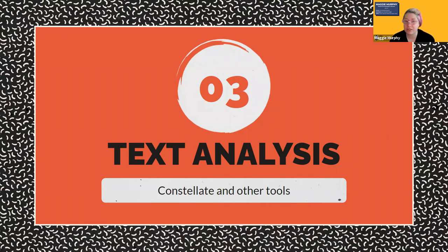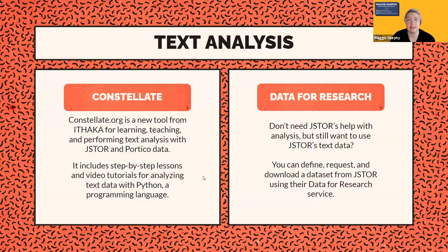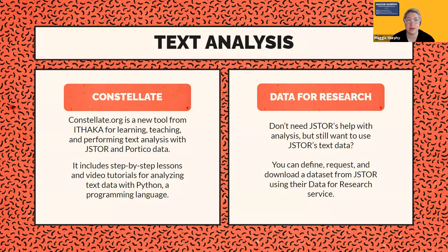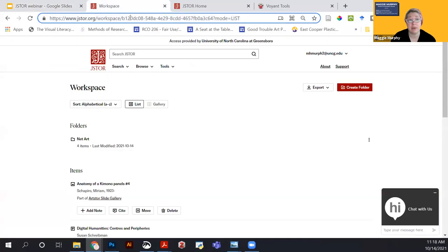Constellate aims to teach you, the researcher, how to use Python to perform text analysis using JSTOR's text data, and also how to teach those basics to others. If you're a graduate student, you could do peer teaching. If you're an instructor, you can teach students using this platform. Constellate is at Constellate.org and has step-by-step lessons, video tutorials, and an integrated platform for importing and analyzing data sets defined from JSTOR. It is currently in beta.